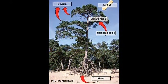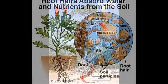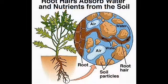They prepare their own food with the help of raw materials like carbon dioxide, water, sunlight and chlorophyll. Of these, water and minerals are obtained from the soil.